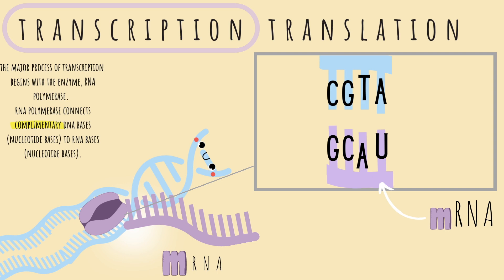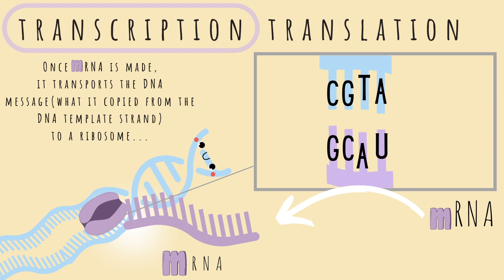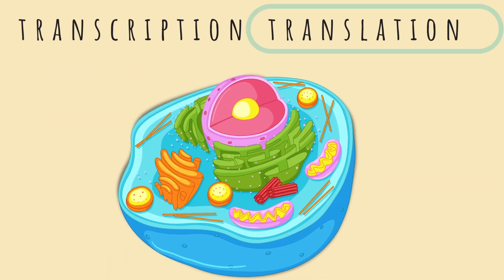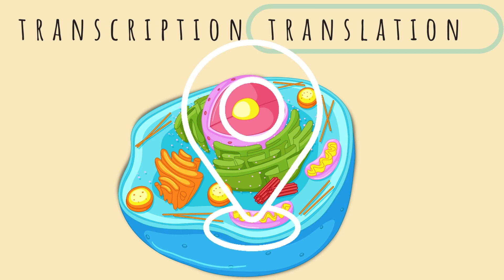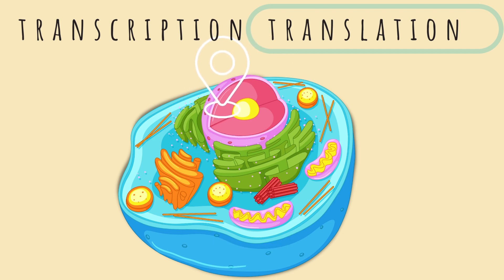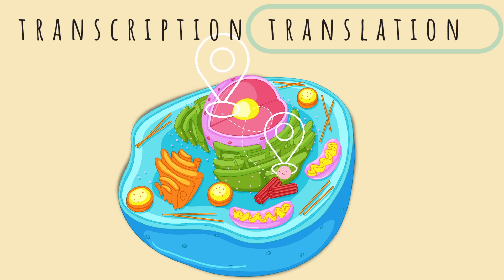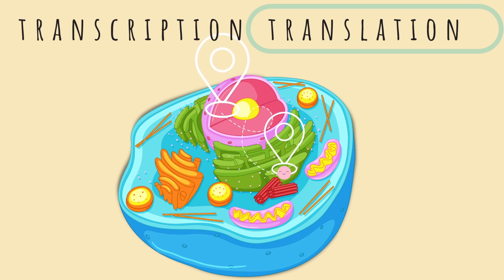This is our new mRNA strand, coming out of the polymerase enzyme. Once mRNA is made, it transports the DNA message — that nucleotide sequence coded from the DNA template strand — to the ribosomes. Transcription happens inside the nucleus of the cell. After mRNA is made, it travels to the ribosomes, which you can find on the endoplasmic reticulum or freely in the cytoplasm. Protein synthesis occurs more commonly in the ribosomes on the endoplasmic reticulum.